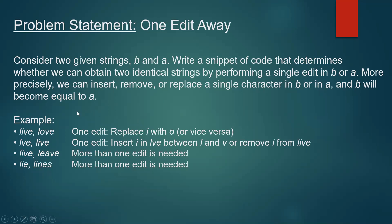We can understand it better with examples. Consider 'live' and 'love' — if we replace 'i' with 'o' in the first string, or replace 'o' with 'i' in the second string, the two strings become identical. So we call them one edit away. In the second example, if we insert 'i' between 'l' and 'v' in the first string, or remove 'i' from the second string, these two strings also become equal with only one edit. So these are also one edit away.